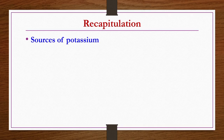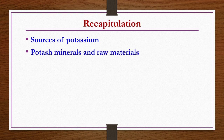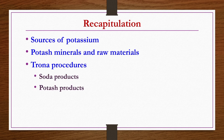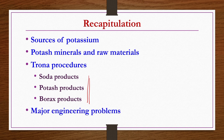Before going into the details of today's lecture, we will have a recapitulation of what we have seen in the previous lecture. We started with Potassium Industries - sources of potassium, potash minerals and raw materials, and then the Trona procedure, where we have three different steps to get soda products, potash products, and borax products, all obtained from the lake brine by doing different kinds of processes. We also saw the major engineering problems of this Trona procedure.